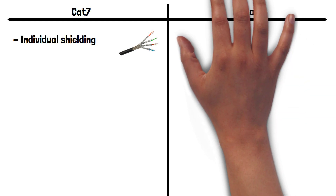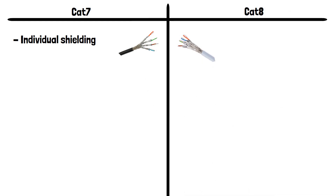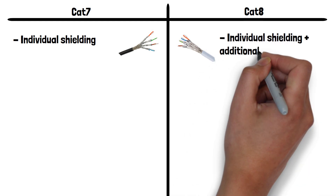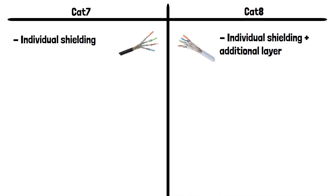CAT8 cables are similar in design, but CAT8 goes a step further than CAT7 and adds an additional layer of shielding to further reduce interference, enabling even faster speeds. This is why CAT8 cables can have a slightly thicker appearance than CAT7.